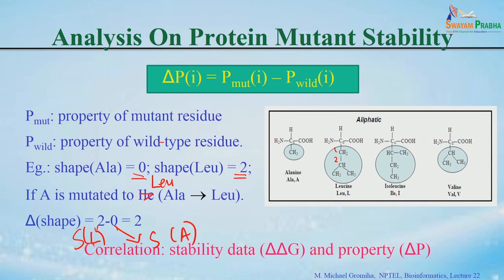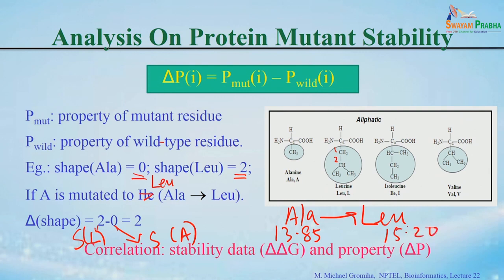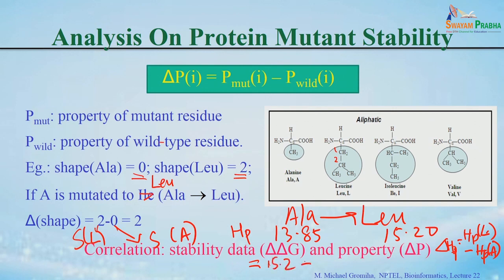For hydrophobicity, if you convert alanine to leucine — alanine has a hydrophobicity value of 13.85 and leucine has 15.20 — then delta Hp equals Hp of leucine minus Hp of alanine, which equals 15.2 minus 13.85, giving 1.35. For any property, if you know the mutated residue and the wild-type residue, you can calculate the delta property value.